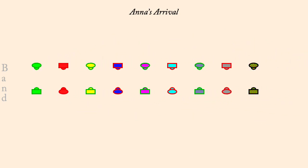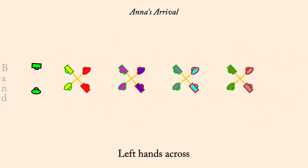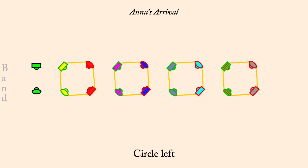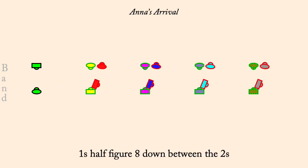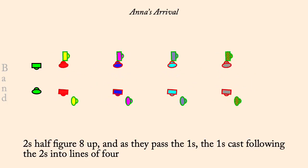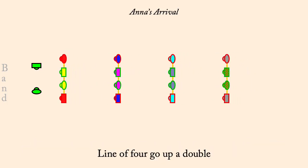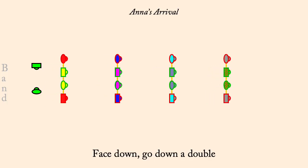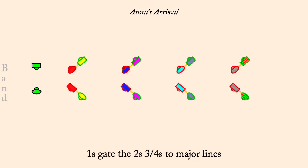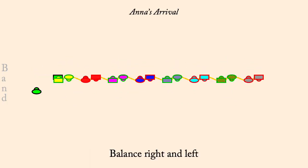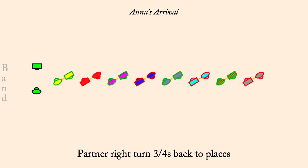Left hands across. Circle left. Ones half figure eight down between the twos. Twos half figure eight up into the middle of a line of four as ones cast to ends. Line of four go up the hall. Neighbor set. Line of four go down the hall. Ones gate twos. Partner right three quarters to a wavy line. Balance right then left. Partner right three quarters to places. Turn single left.